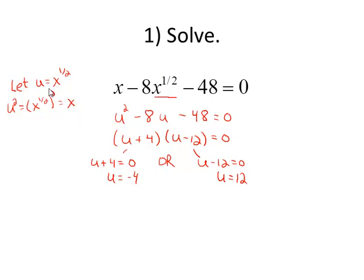Now we'll replace u by x to the 1 half, and we'll solve that. So first I have x to the 1 half equals negative 4. We may not be able to see this yet, but this is going to lead to an extraneous solution. When I square both sides to take care of the 1 half power, negative 4 squared is 16.